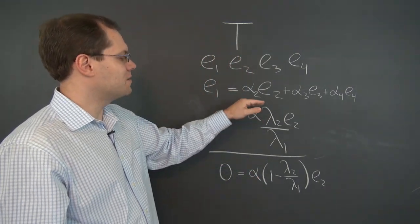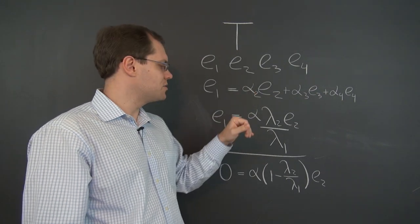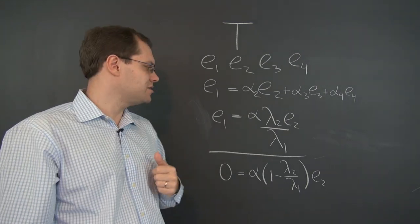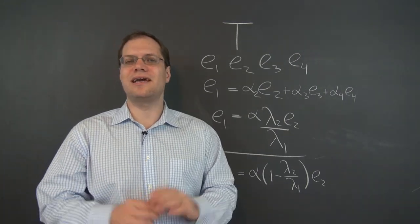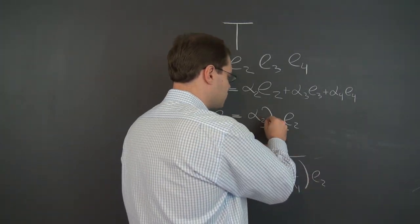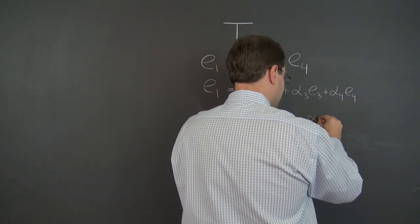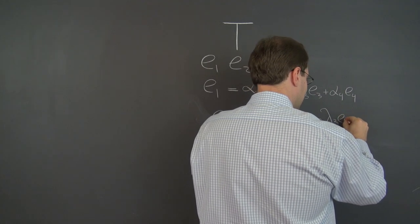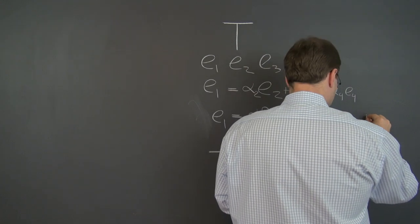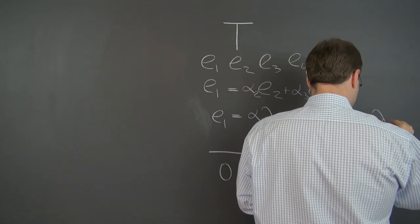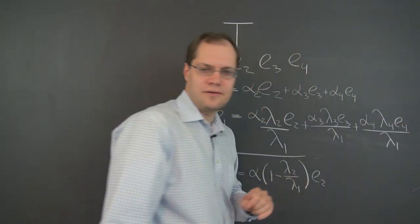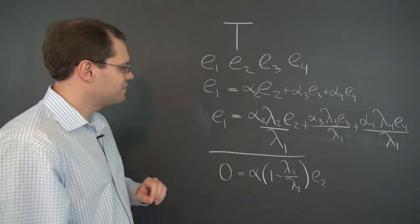We'll do what we did before, which is apply the linear transformation to both sides, and divide by lambda 1 on the assumption that it's not zero. And if it is zero, it will work in a similar way. I'll leave it up to you. We'll just deal with the case when it's not zero. So there will be three additional terms here, plus alpha 3 lambda 3 E3 divided by lambda 1, and the final term, plus alpha 4 lambda 4 E4 divided by lambda 1.